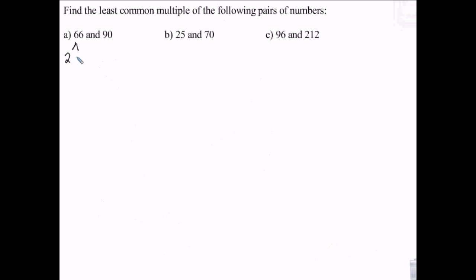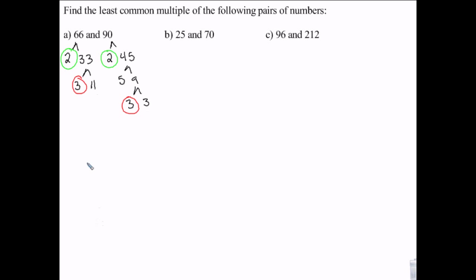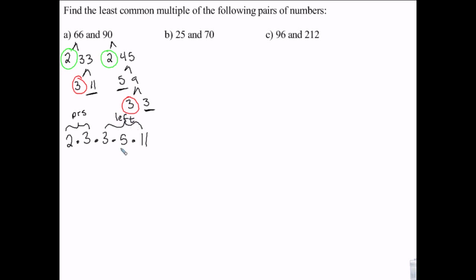66 is 2 times 33, and that's 3 times 11. 90 is 2 times 45, which is 5 times 9, which is 3 times 3. I have a pair of 2s and a pair of 3s. So I take one 2 and one 3 from the pairs, then I have an 11, a 5, and another 3 left over. That gives me 2 times 3 times 3 times 5 times 11.